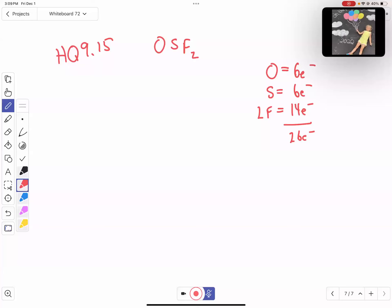The least electronegative atom goes in the center, and electronegativity increases as we go to the upper right, which means it decreases down a group. So even though oxygen and sulfur are in the same group, because sulfur is farther down, it's going to be less electronegative. So we're going to place sulfur in the center.